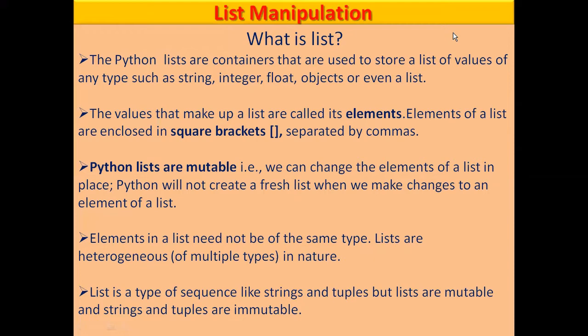The values that make up a list are called its elements. The elements of a list are enclosed in square brackets, separated by commas.